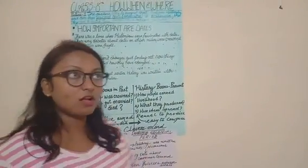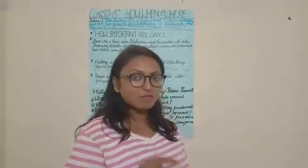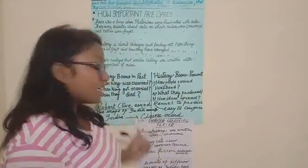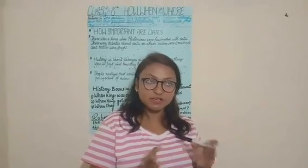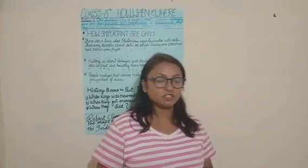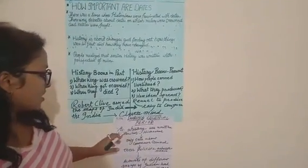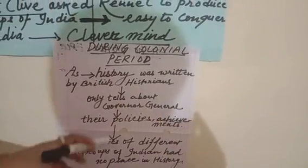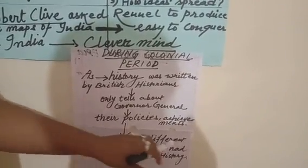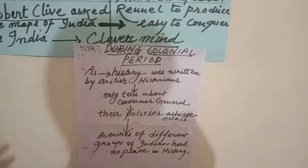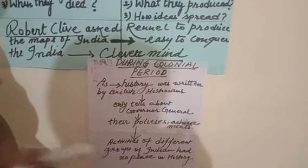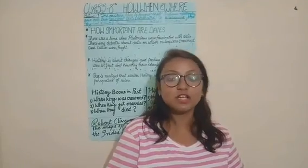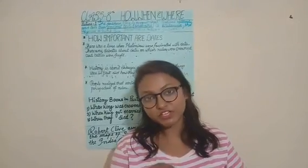I have given this topic the name 'Colonial Period.' Previously, in British India, history was only written by British historians. It only told about the Governor Generals, all the Governor Generals, and their policies and achievements. But one very important thing to note is that the activities of different groups of Indians had no place in history. If you read those books, you will see only things encouraged by the Britishers. For common people, there was no place in British Indian history.